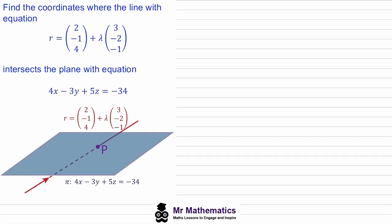In this video I'm going to show you how to find the point of intersection between a line and a plane. In our first example we've been asked to find the coordinates where this line, given in parametric form, intersects this plane, given in its Cartesian form.